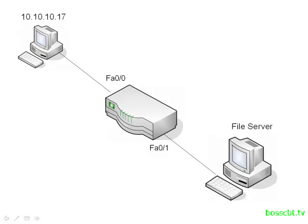Let's look at an example. Here we have a simple network with one host at 10.10.10.17 and a file server, both connected to the same router. What we want to do is prevent this particular host from accessing the file server, while at the same time allowing everybody else to access it — so we just want to deny access for that one single IP address.